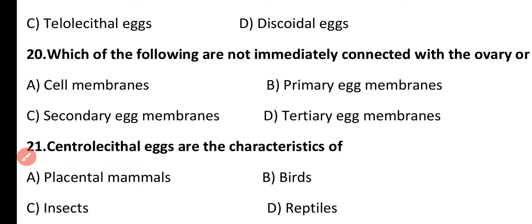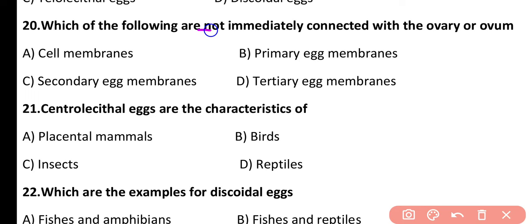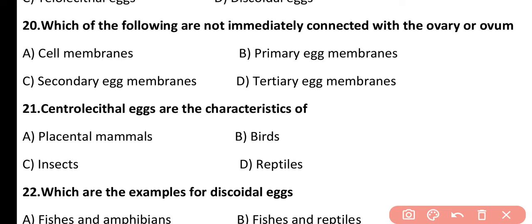Question 20. Which of the following is not immediately connected with the ovary or ovum? Cell membrane, primary egg membrane, secondary egg membrane, or tertiary egg membrane? The correct answer is option D. Tertiary egg membrane is not immediately connected with the ovum or ovary; it is secreted when the egg passes through the oviduct.